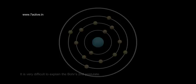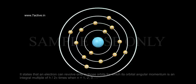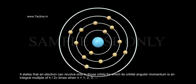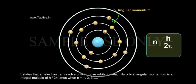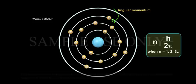De Broglie's Explanation of Bohr's Second Postulate of Quantization. It is very difficult to explain Bohr's second postulate. It states that an electron can revolve only in those orbits for which its orbital angular momentum is an integral multiple of h by 2π times when n equals 1, 2, 3, and so on.